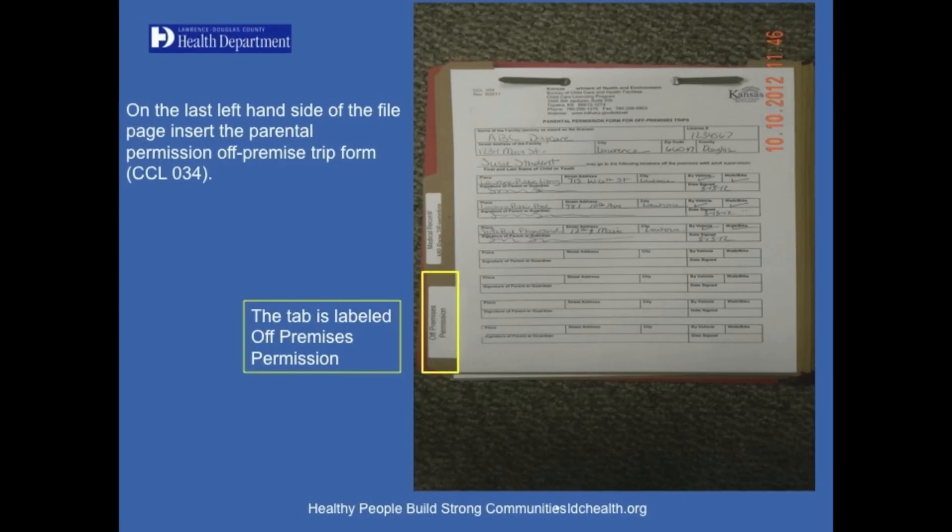On the left-hand side of the next file folder page, insert the parental permission off-premise trip form, CCL 034. The tab is labeled Off-Premises Permission.